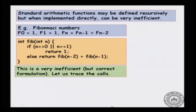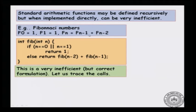Standard arithmetic functions can also be defined using two-way recursion. A classic example is Fibonacci numbers: F(0) = 1, F(1) = 1, and for n ≥ 2, F(n) = F(n-1) + F(n-2). Coding this up: int fib(int n) — if n is 0 or 1, return 1; otherwise return fib(n-2) + fib(n-1). This is a very simple arithmetic sequence defined naturally using two-way recursion.